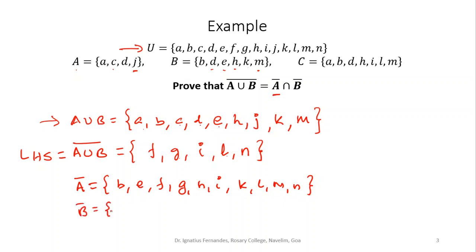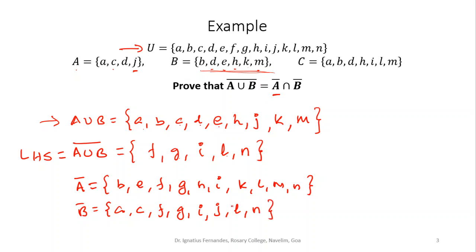The same way I write down B complement — the elements not in B. Going through U, the elements not in B are A, C, F, G, I, J, L, N — everything except B, D, E, H, K, M.